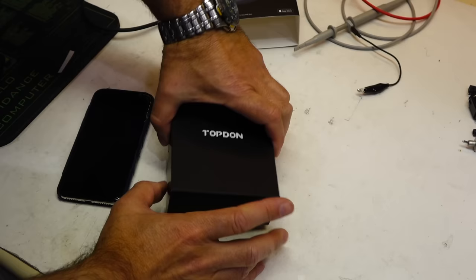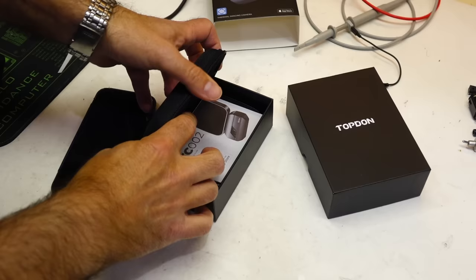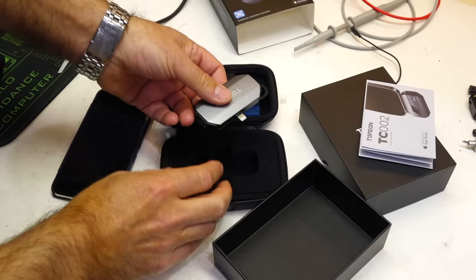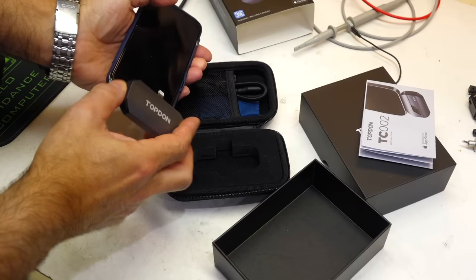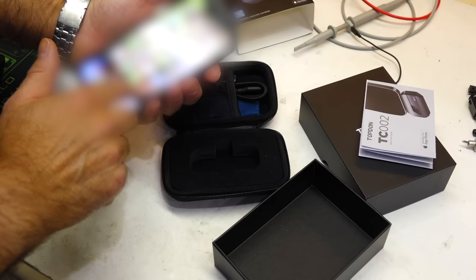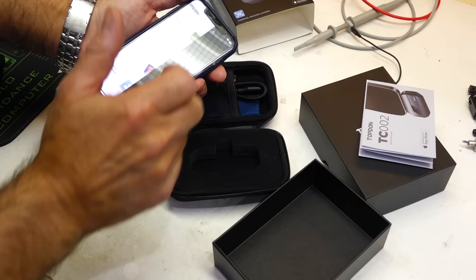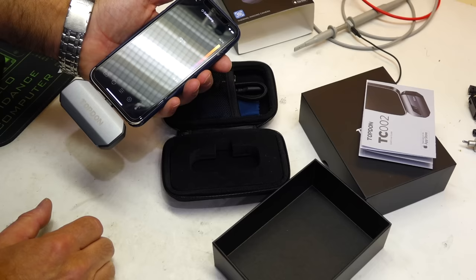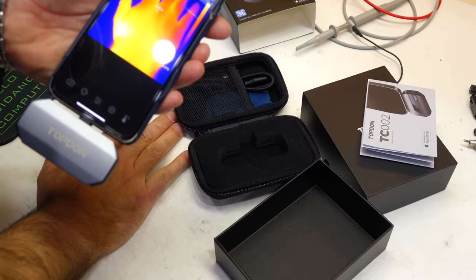This one has been donated for review by TopDon, it's called the TC View. It comes in this nice case, which has another case inside. They have them both for iOS and Android, mine is iOS. I was surprised at how easy it was to set up. Plug it in, turn the phone on, and there you go. It recognized it. Thermal imaging. And ta-da! Here's my hand!